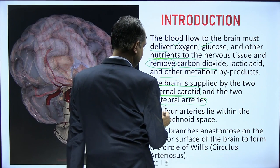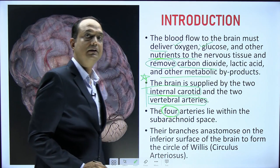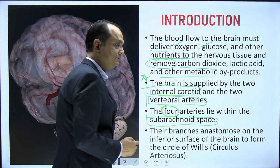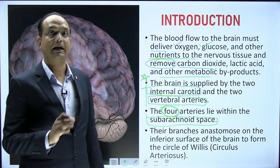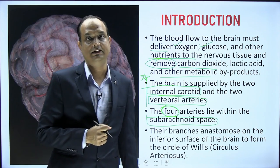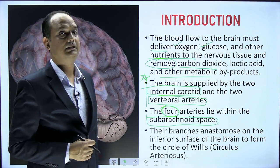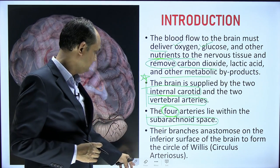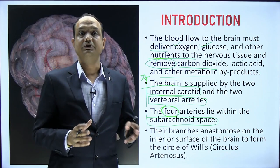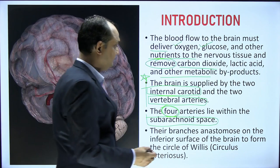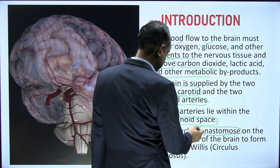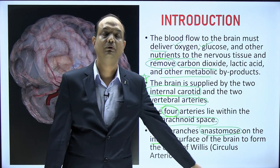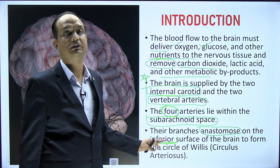All four arteries, when they enter inside the cranial cavity, lie in the subarachnoid space — the area between the pia mater and the arachnoid mater which is full of CSF. These arteries give branches, and these branches show anastomosis on the inferior surface of the brain, which we discuss as the Circle of Willis.